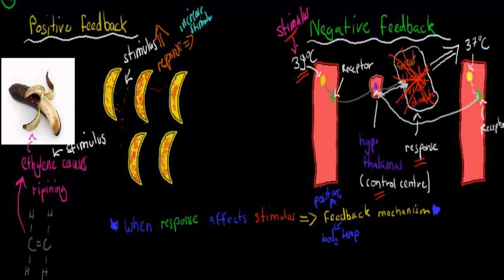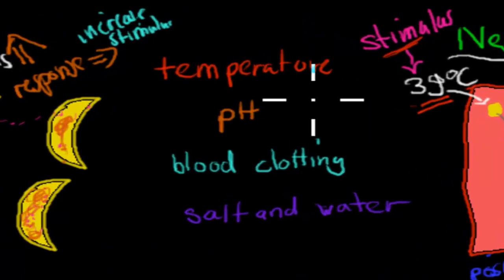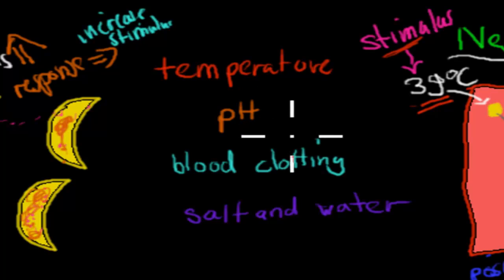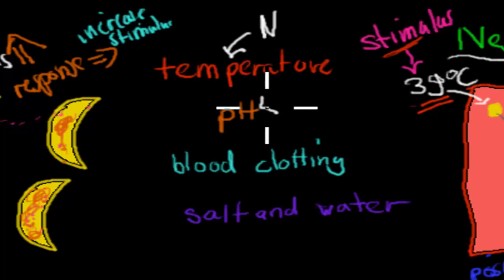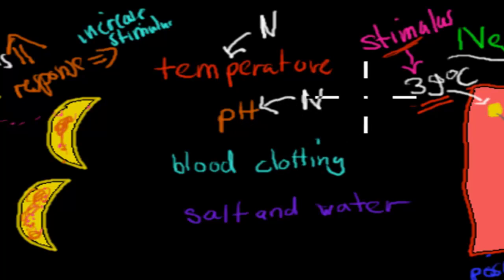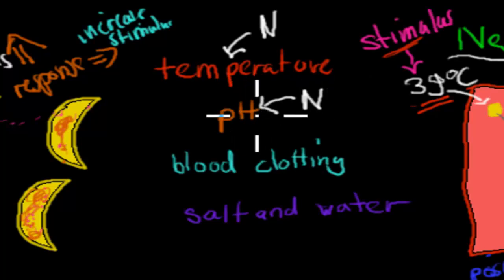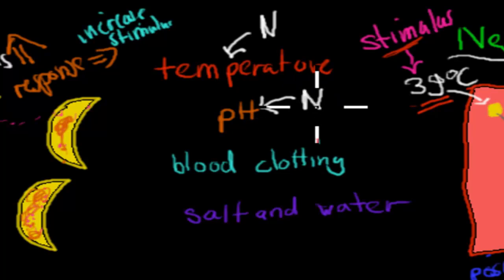I'll go over a few things our body controls — temperature, pH, blood clotting, and salt and water balance — and say whether each is positive or negative feedback. Temperature is definitely negative feedback because it tries to balance within a defined range — if it's too high, our enzymes would stop functioning. pH is also negative feedback. Our enzymes have an optimum pH level, and if it goes too low or too high, they stop working. If the stimulus were that pH is now at 9, which is too high, and the response brought it even higher, our enzymes would be even less efficient. So pH balance is negative feedback — we try to keep it at a fine balance.